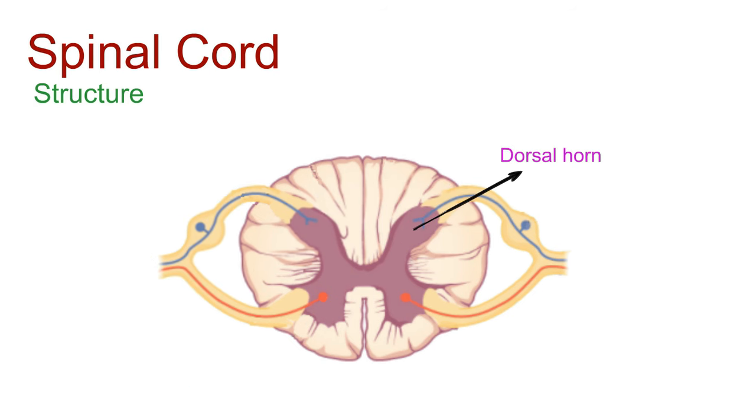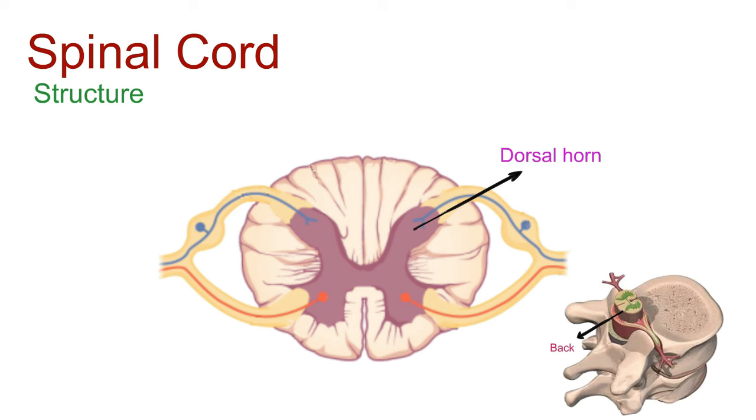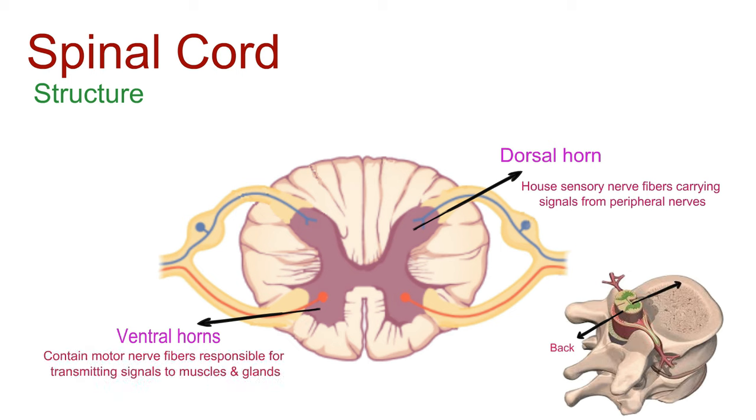The dorsal horns, extending towards the back, house sensory nerve fibers carrying signals from peripheral nerves. On the other side, the ventral horns, projecting forward, contain motor nerve fibers responsible for transmitting signals to muscles and glands.